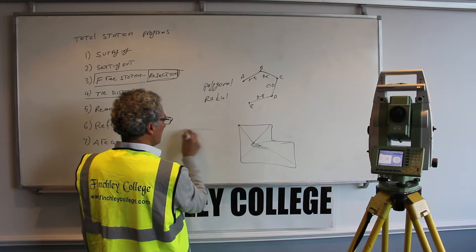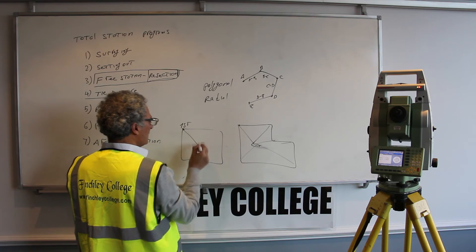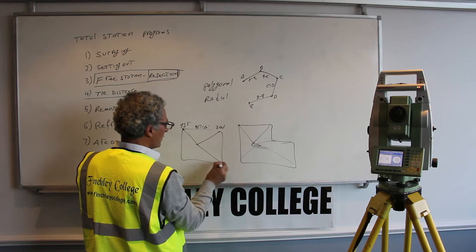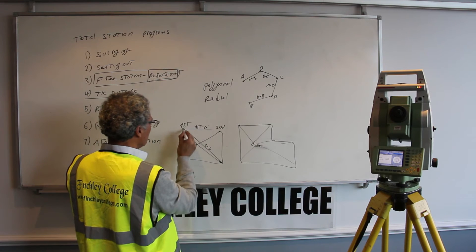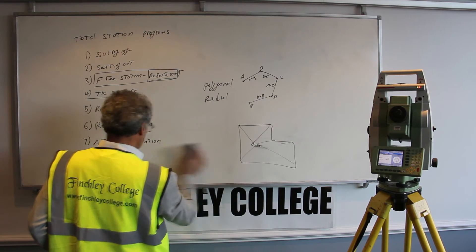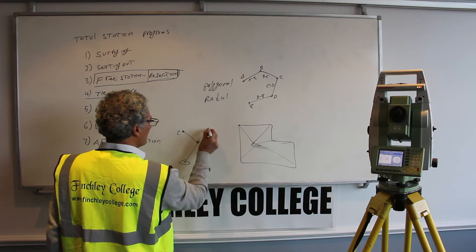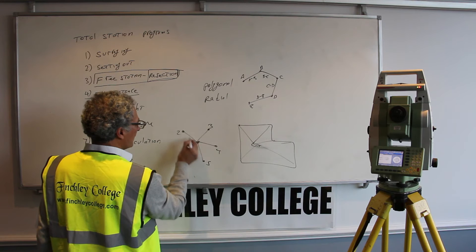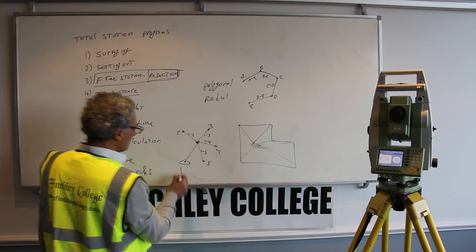With the radial method it's different. You sight to the first point, then you sight to the second point and it gives the distance from first to second; then you sight to the third point and it gives the distance from first to third; then to a fourth point, giving the distance from first to fourth. Essentially, you set up here, sight to the first point, then second, third, fourth, fifth — and the dimensions are always from the first point: one to two, one to three, one to four, one to five. That is radial.